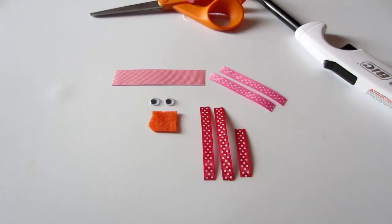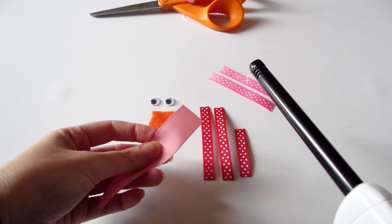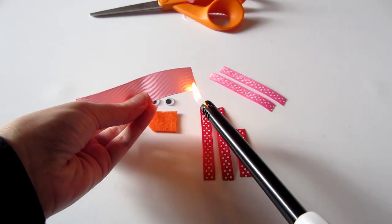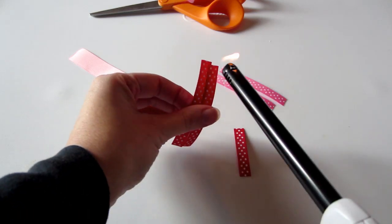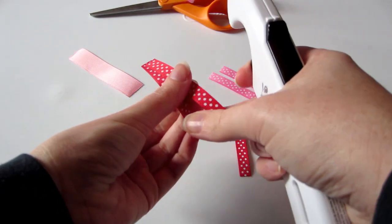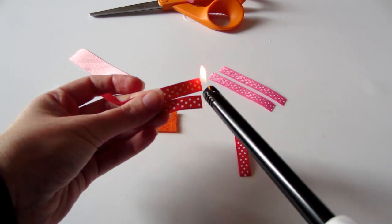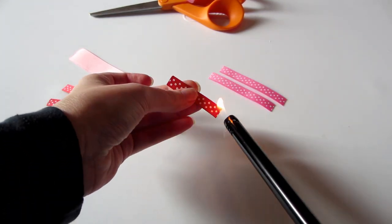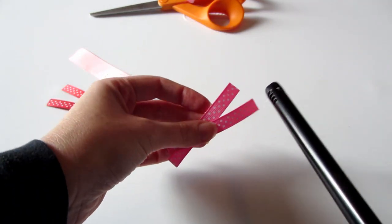First things first, you are going to want to heat seal all of the ends of your ribbons. Just go ahead and give all the ribbon ends a quick swipe with your lighter. This is just going to make life so much easier. So go ahead and heat seal every piece of ribbon.